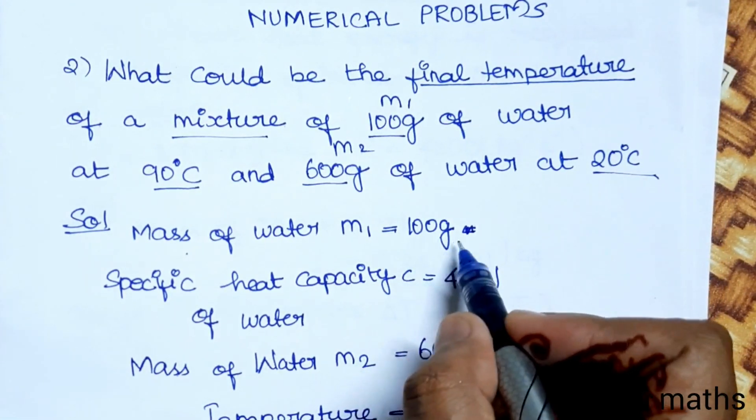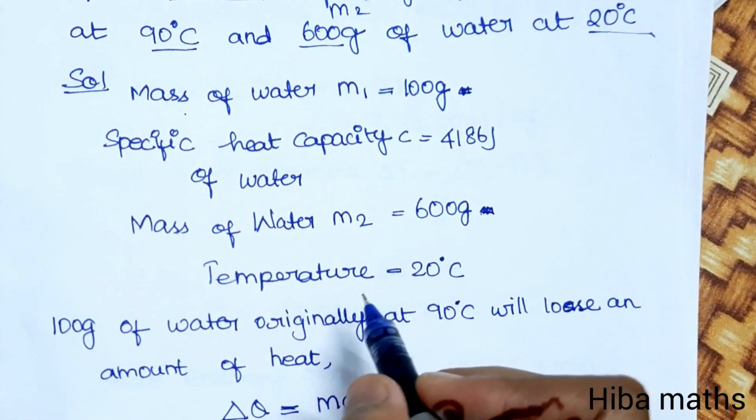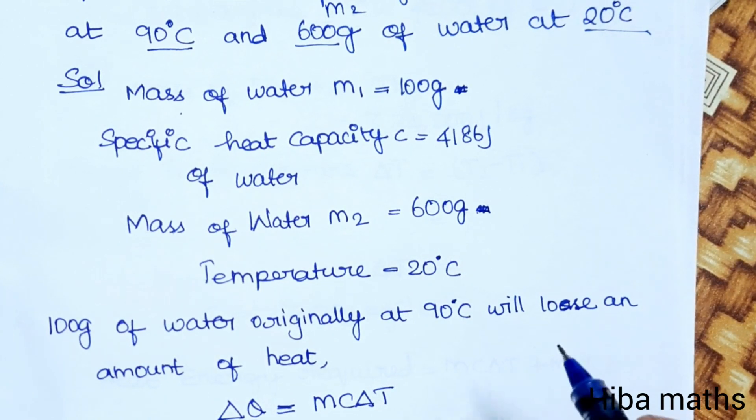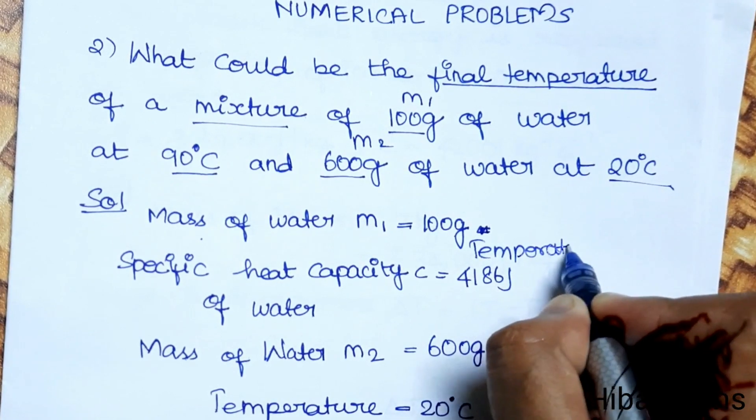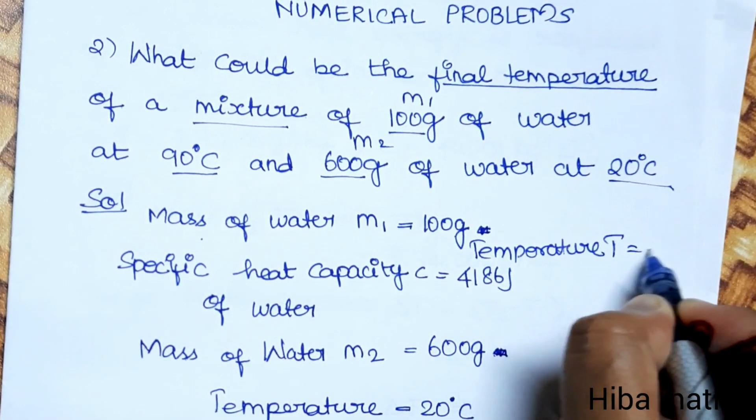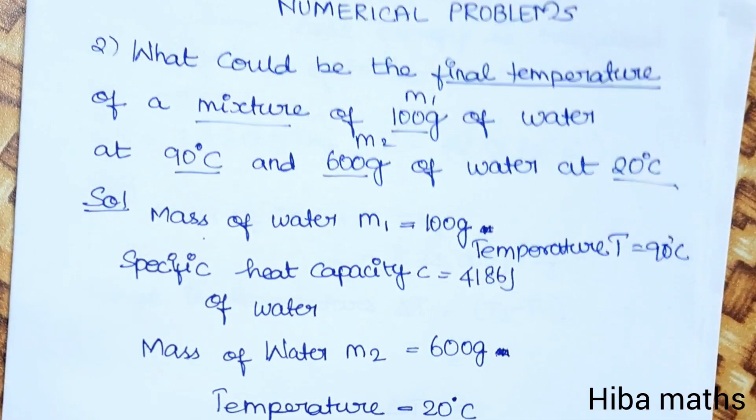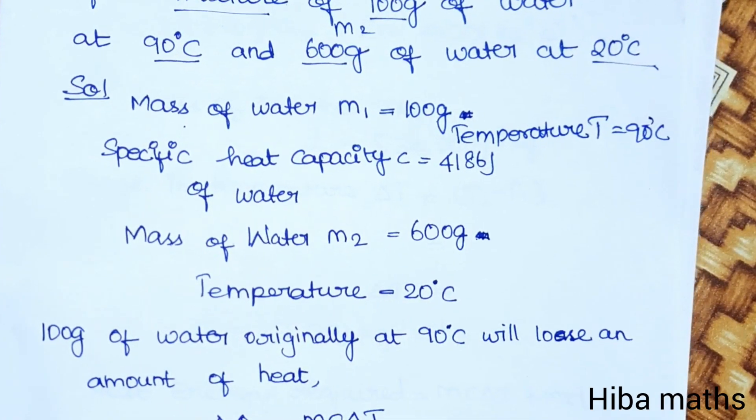The 100 grams has temperature 90 degrees Celsius, and the temperature for m2 is 20 degrees Celsius.